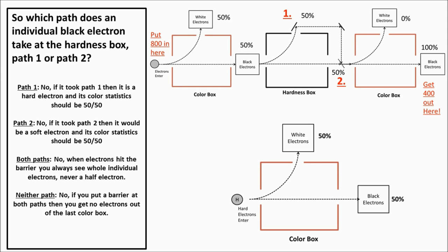So we can't say it took both paths. The only option left is that it took neither path — but we can test this too. If we put a barrier at both path one and path two, no electrons come out of the last color box. So it didn't take neither path either. We've exhausted all options: the electrons don't take path one, don't take path two, don't take both, and don't take neither. Scientists had to come up with a new term to describe this type of movement, and they called it superposition.